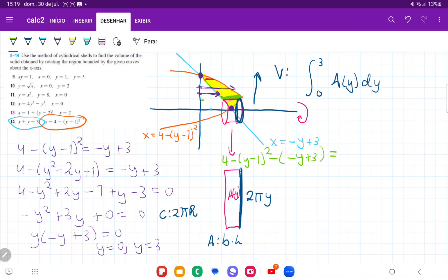And so let me just simplify this. This gives us 4 minus y minus 1 squared, and then minus minus, so plus y minus 3.